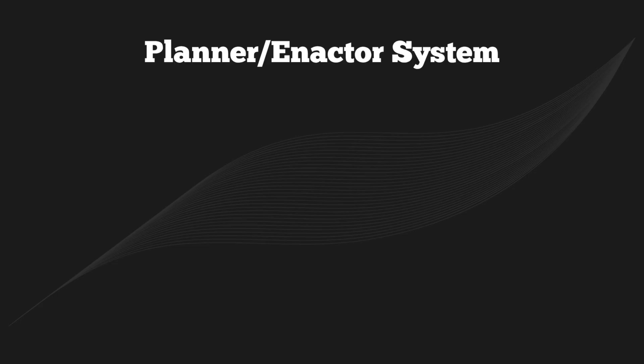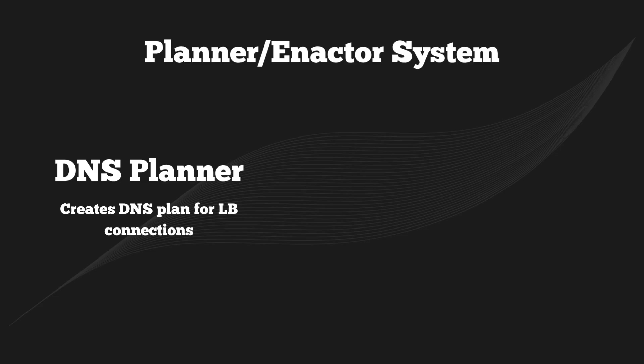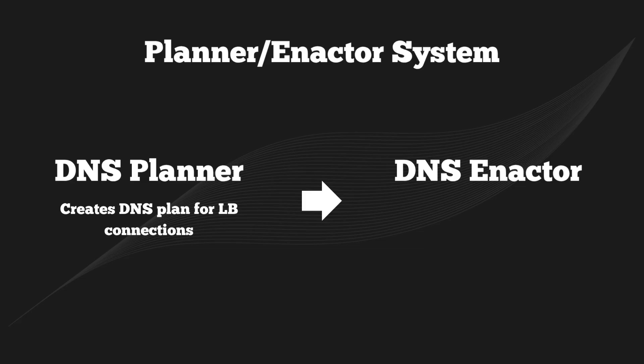DynamoDB was the first system that was affected, so let's break down the root cause. DynamoDB uses a system that automatically updates DNS records in Route 53. This is what lets customers and other AWS services find the endpoint for the service — in this case, dynamodb.useast1.amazonaws.com. This system is comprised of two major parts. The first is the DNS Planner, which creates a list of load balancers which should be active for DynamoDB within a given region.